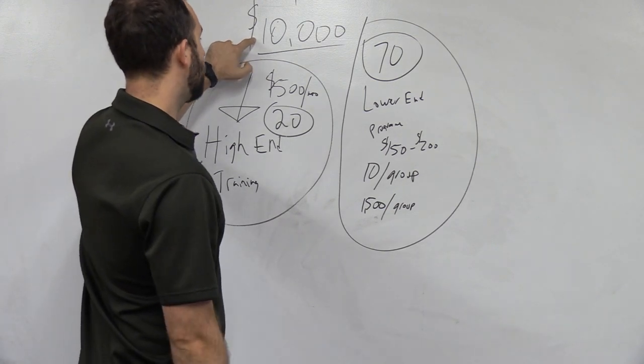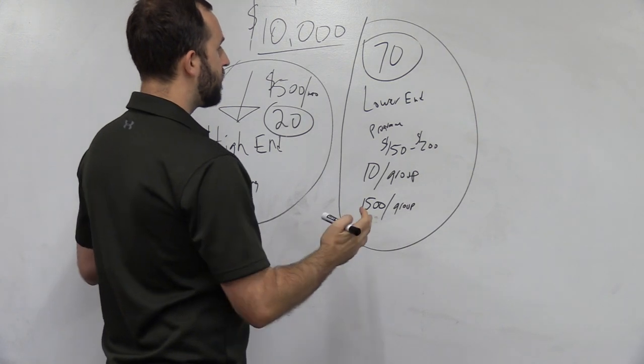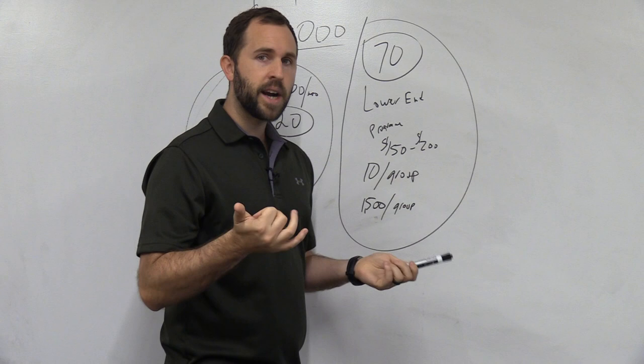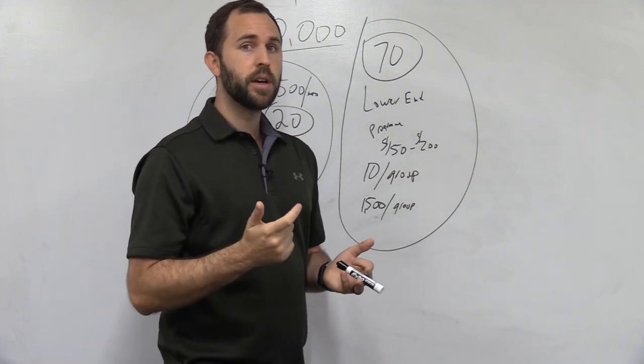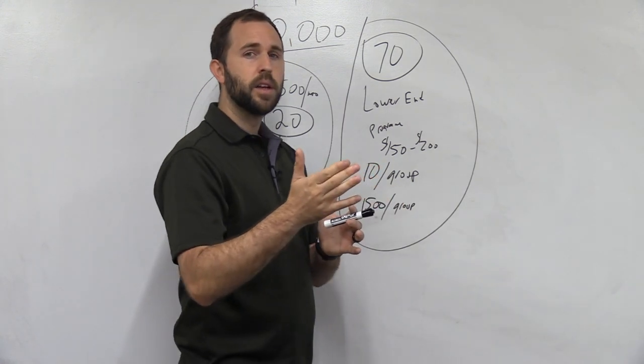And if you want to make 10 grand a month consistently, you're going to have to think, well, let's reverse engineer this business. Let's look at it and say, well, how much do I actually want to work? How many clients do I want to be around? And then from there we make easy decisions. This way you're on the right path.